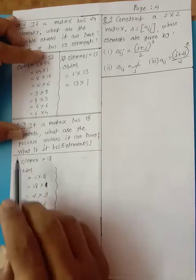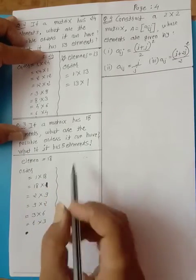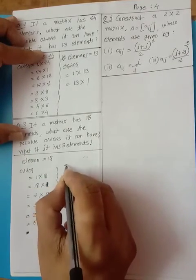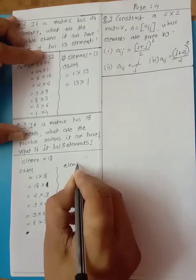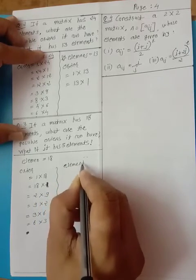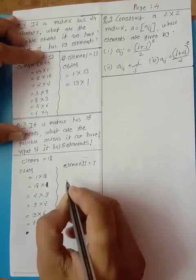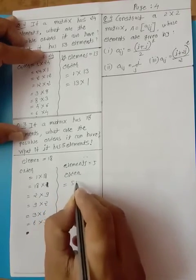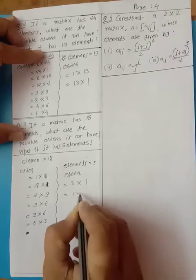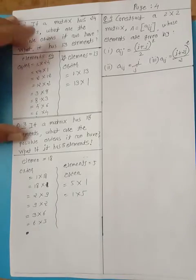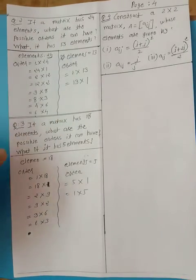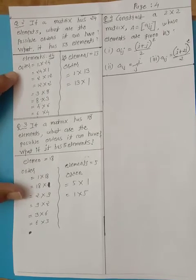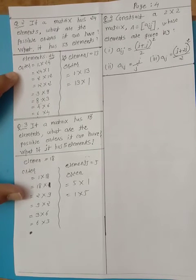Inside this there is also another question: if it has 5 elements — suppose 5 — then for 5, thinking of other factors: 5×1 or 1×5. That means you were given elements and had to decide how many orders of matrix can be made at maximum. That was question number 2 and 3.